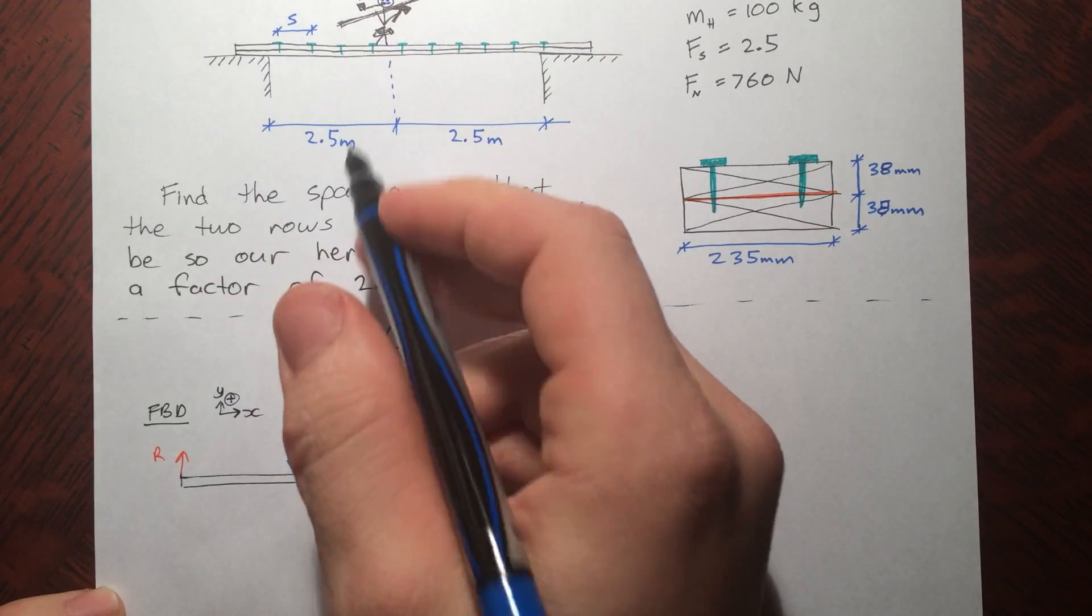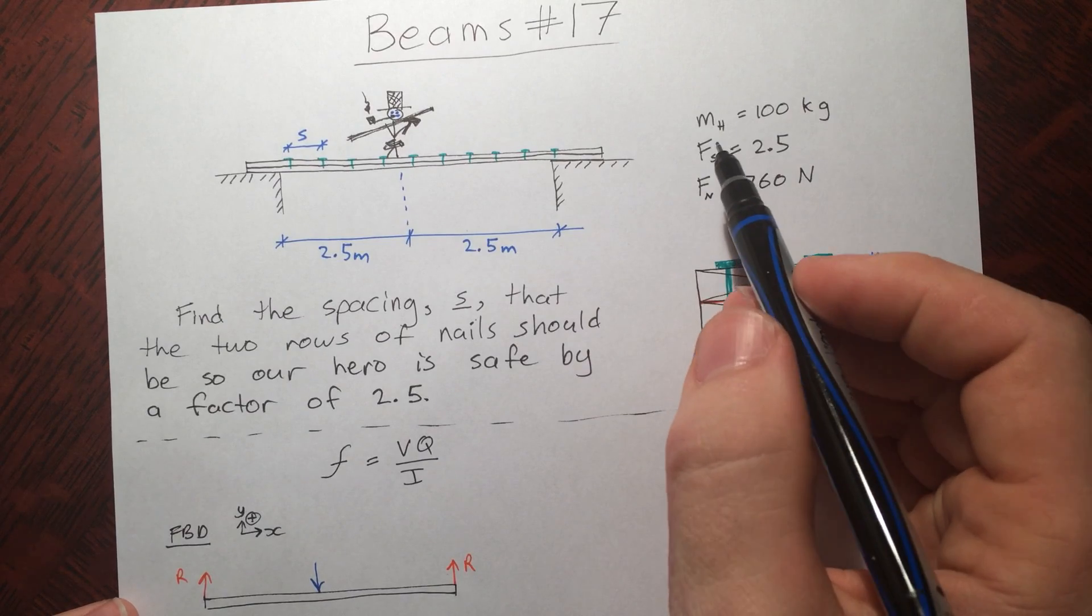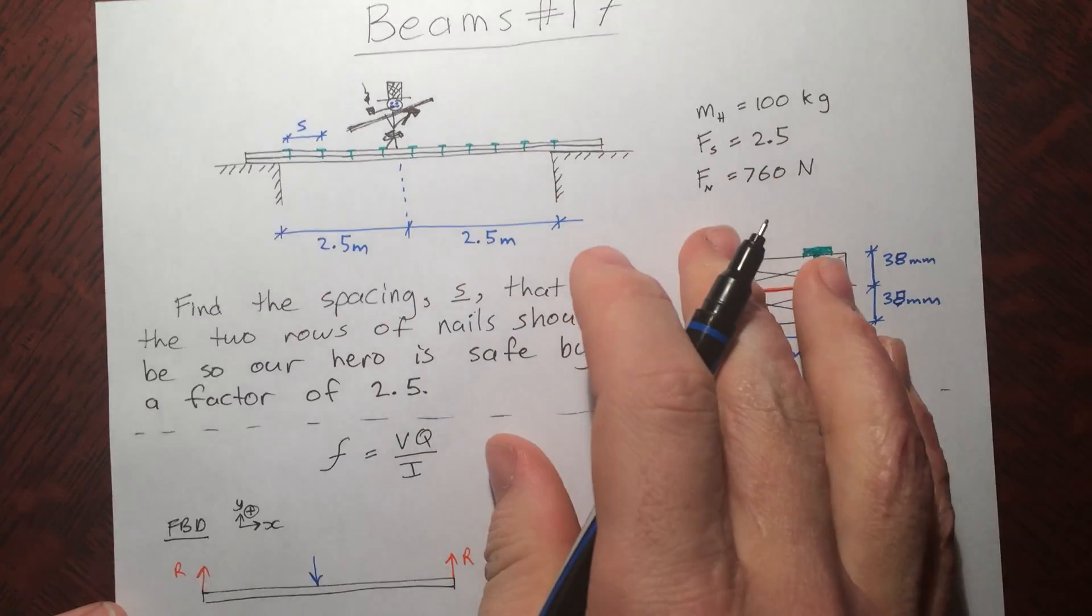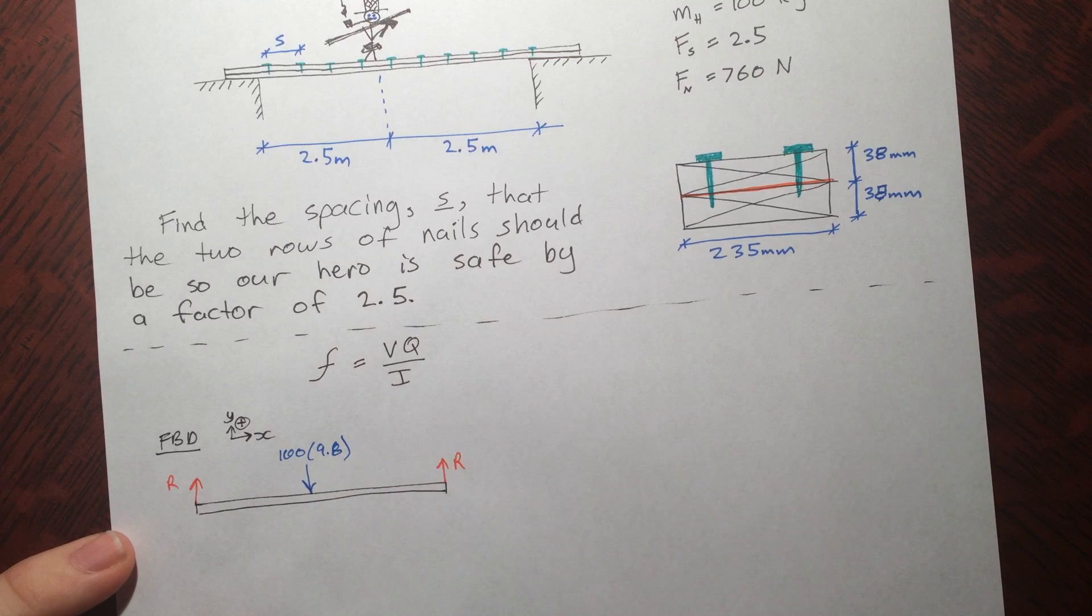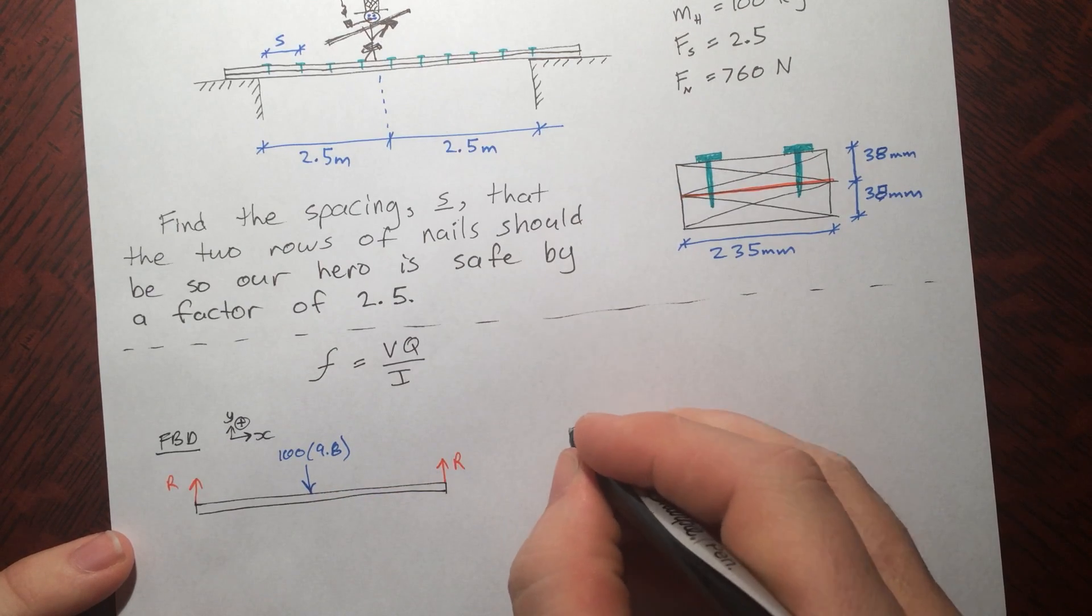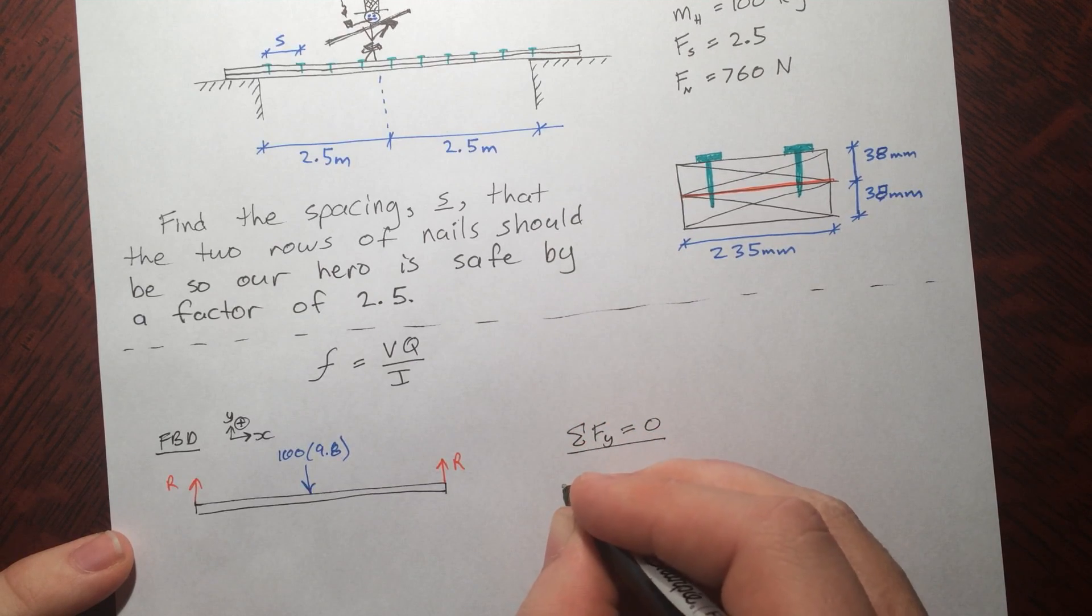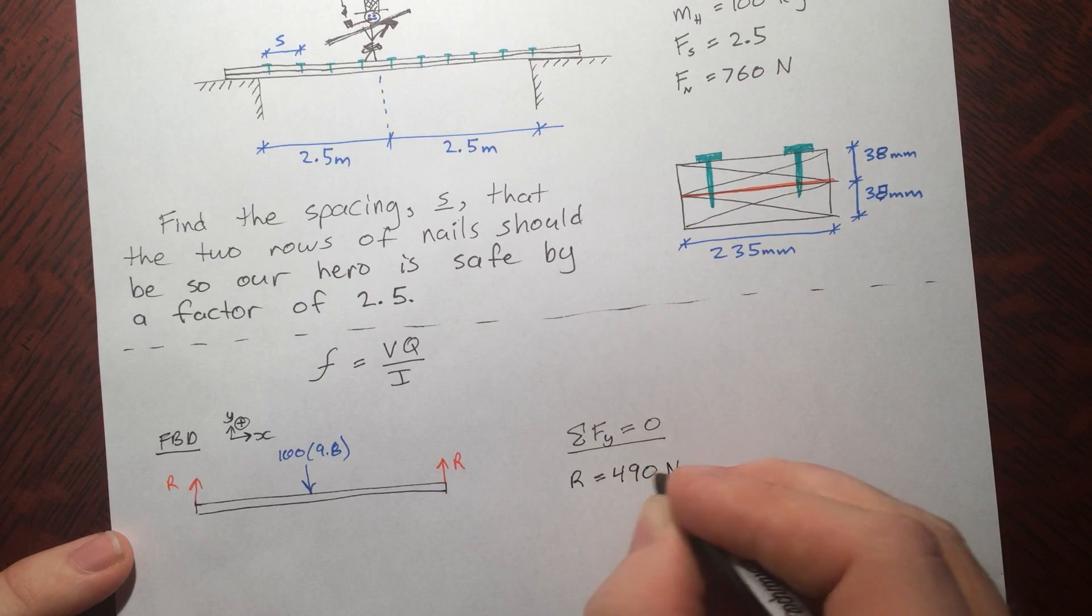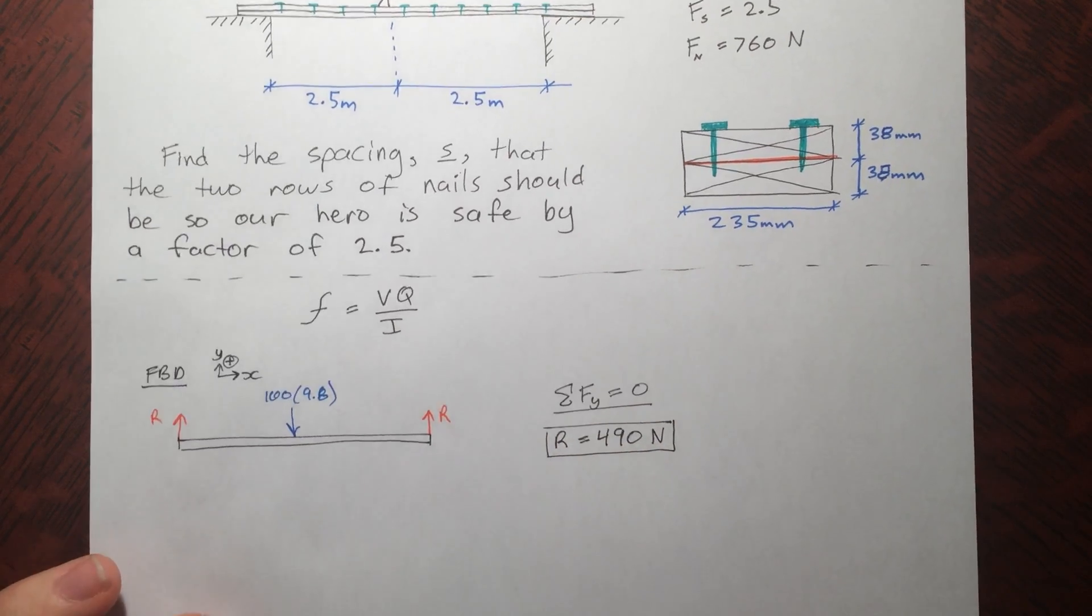To find V, we're going to need a free body diagram of the situation. So we have a weight, of course, from the guy. I'm going to neglect the weight of the wood, just to make this problem a little simpler. And we're told to use a mass of 100 kilograms. Well, we need a force. So mass times gravity. That will give us a force in newtons. So if you just sum up forces and the Y to be zero, you can find the reaction to be 490 newtons.